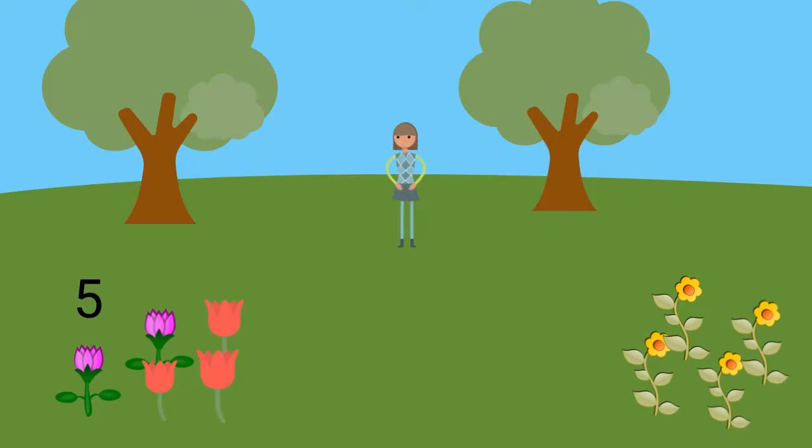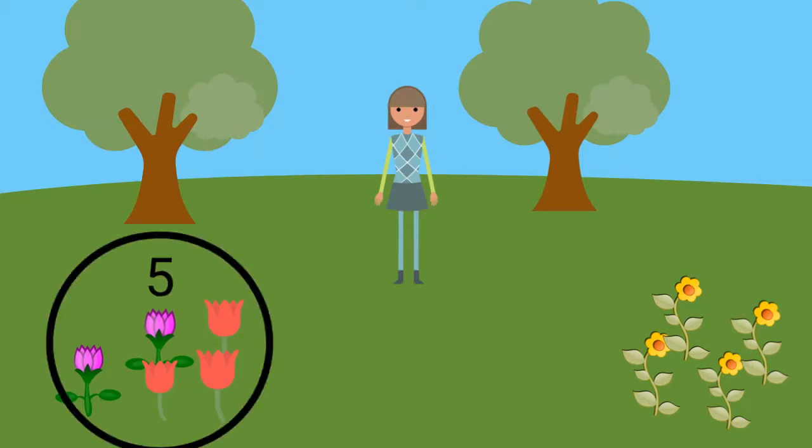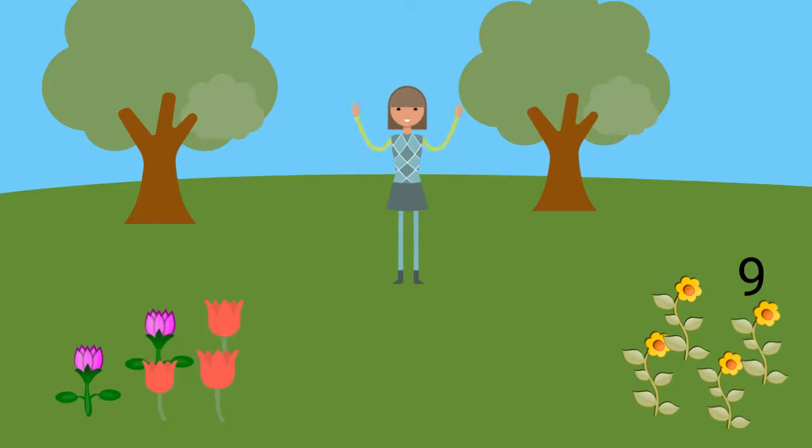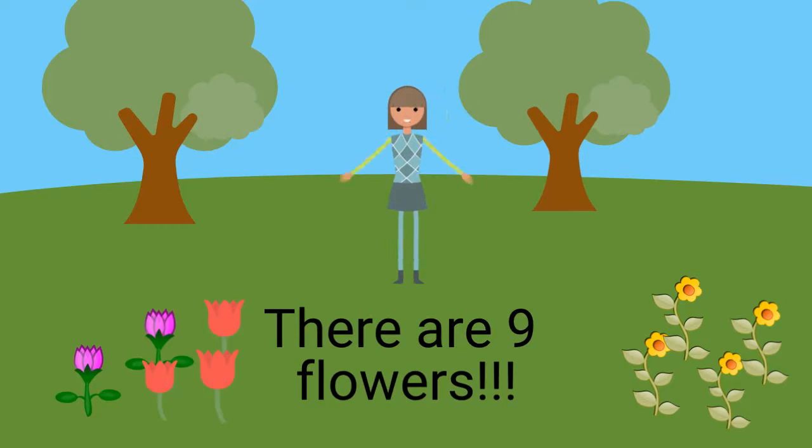Since we know the sum of the red and purple, we can now add in the yellow to find how many flowers there are all together. We will count up from 5 since we know the sum of the red and purple is 5. Ready? 5, 6, 7, 8, 9. Super! You just figured out there are nine flowers in all by using addition.